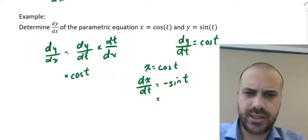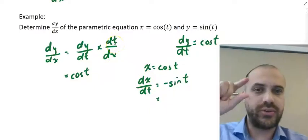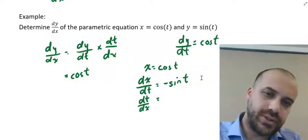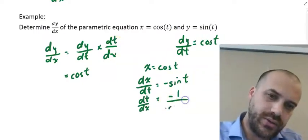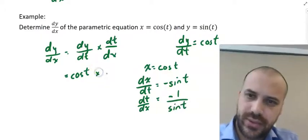And we know that we don't want the derivative of x with respect to t. We want the derivative of t with respect to x. And, of course, that's just going to be the reciprocal. So negative 1 over sin t. And so that's going to go here.